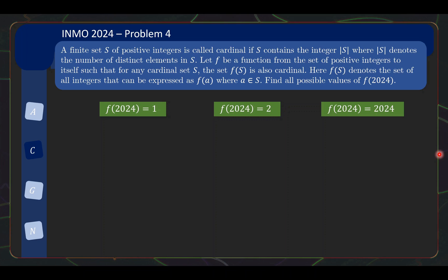And in order to finish the problem, we need to come up with a valid F that meets this condition for all possible cardinal sets. And at the same time, gives you the values 1, 2 or 2024 respectively.